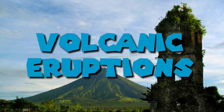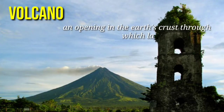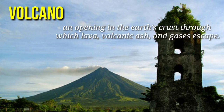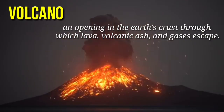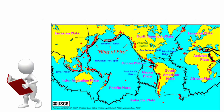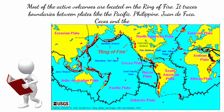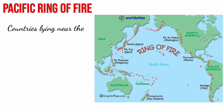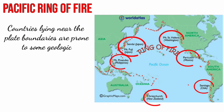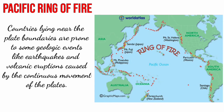Another geologic hazard is volcanic eruption. A volcano is an opening in the earth's crust through which lava, volcanic ash, and gas escape. In a volcano, liquid magma containing dissolved gases rises through cracks in the earth's crust. Most of the active volcanoes are located on the Pacific Ring of Fire, which traces boundaries between plates like the Pacific, Philippine, Juan de Fuca, Cocos, and Nazca Plates. Countries lying near the plate boundaries are prone to geologic events like earthquakes and volcanic eruptions caused by the continuous movement of the plates.